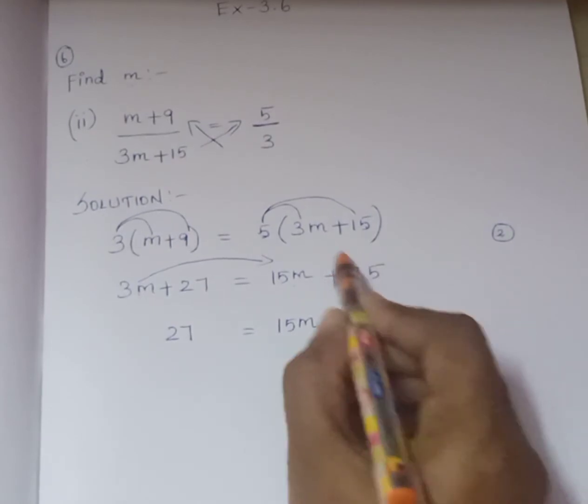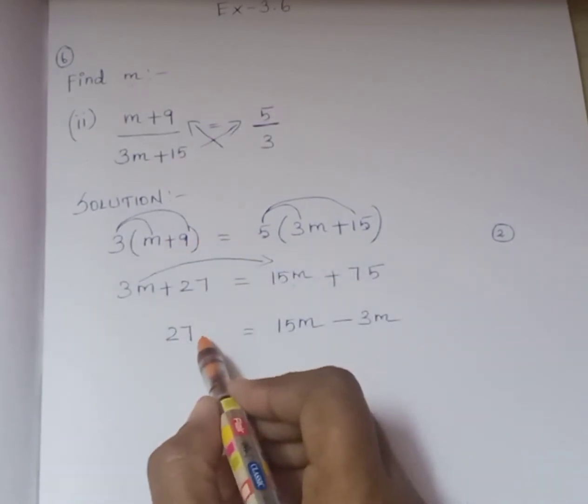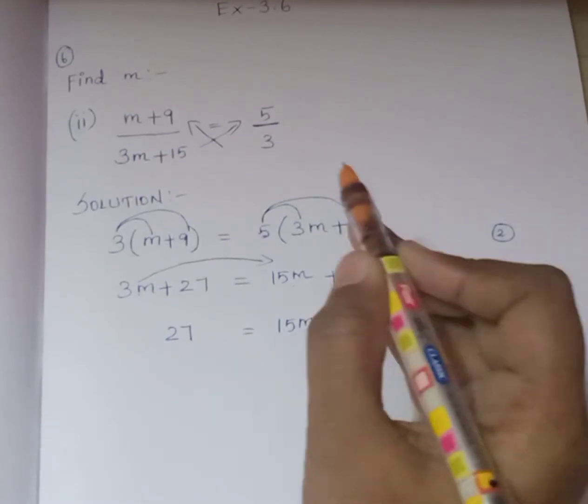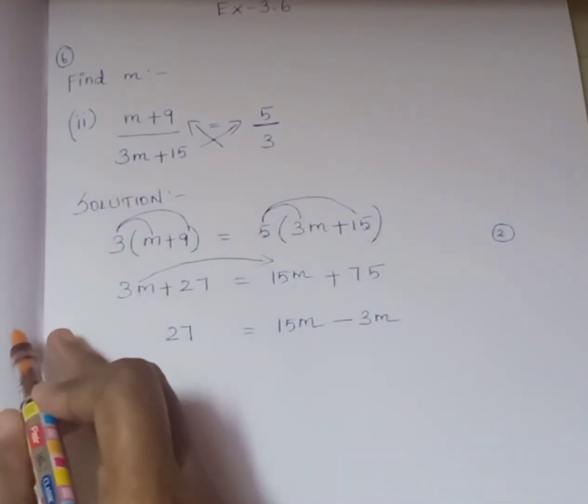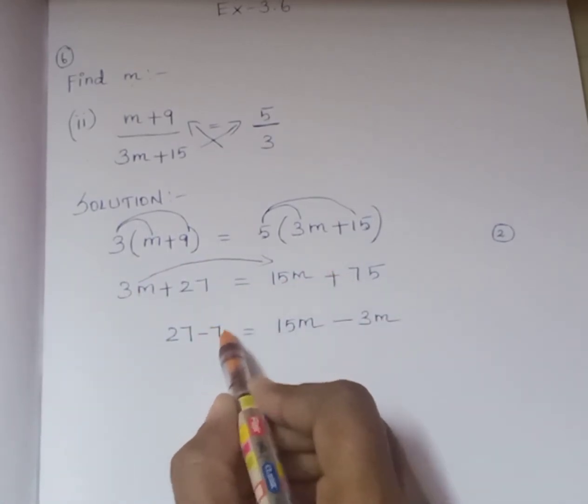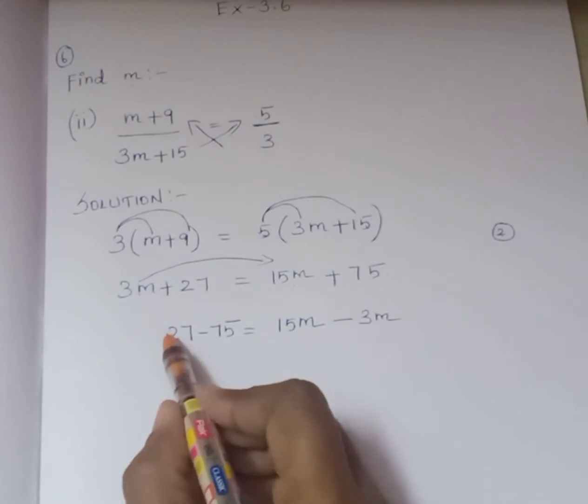Now bring this plus 75 to the left side. I am going to bring this plus 75 from right-hand side to left-hand side. So this plus will be changing to minus 75.